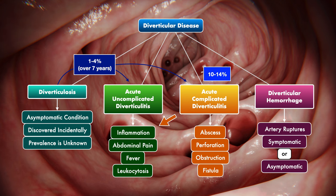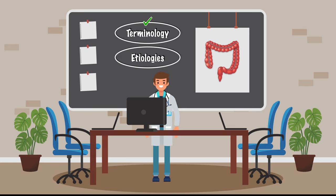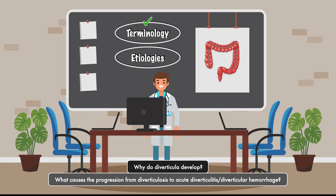Now that we've covered some of the basic terminology, we're going to look at the etiologies — in other words, we'll explore why diverticula develop and what causes the progression from diverticulosis to acute diverticulitis or diverticular hemorrhage.